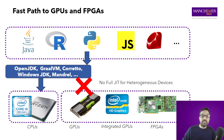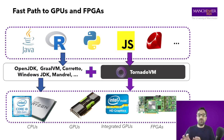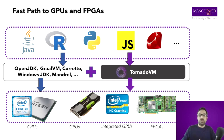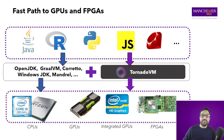And that's where TornadoVM sits. TornadoVM works in combination with an existing JDK. It is a plugin to JDK that allows us to run applications on heterogeneous hardware. And that's what we propose.